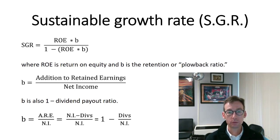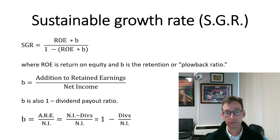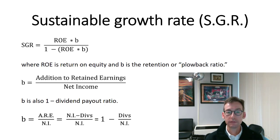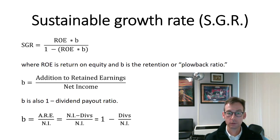You need to be very careful when you read these problems, because tricky finance professors like myself will often give you the dividend payout ratio — let's say 0.4. Would you put 0.4 in for B? Absolutely not. You need to do one minus 0.4, which gives you 0.6. If you got lucky, your professor would give you a dividend payout ratio of 0.5 because they're both the same at that point. But any finance professor worth his PhD would never do that.